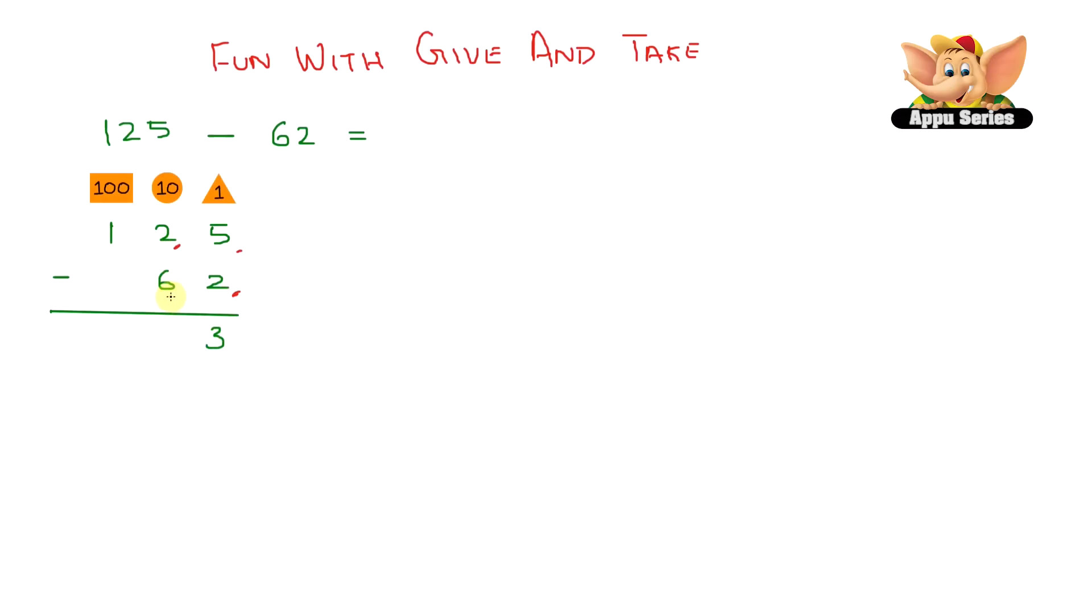In the tens place we have 2 minus 6. So what we do over here is we have to borrow from the hundreds place. So let's borrow 100. So this becomes zero over here and we carry this hundred to the tens place. So 100 becomes ten tens. That's 10 plus 2 equals 12. So 12 minus 6 equals 6.